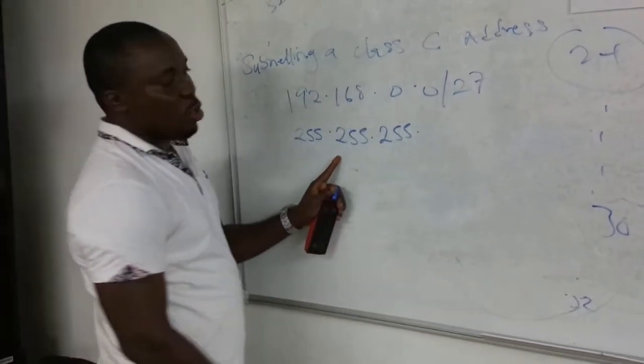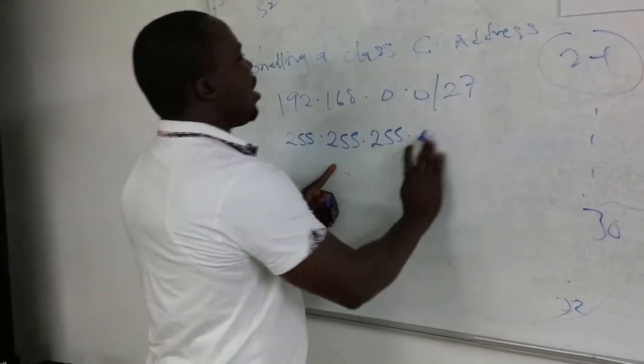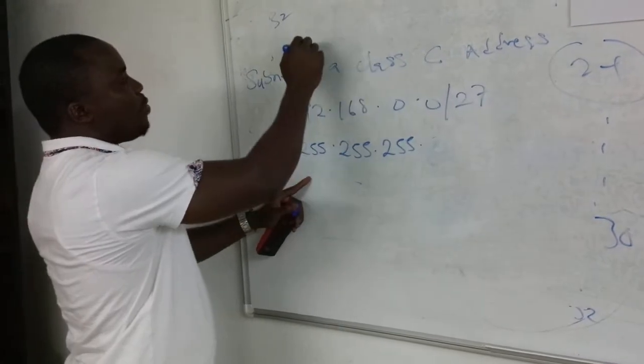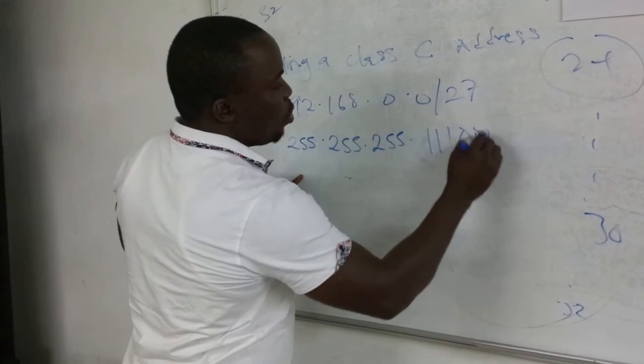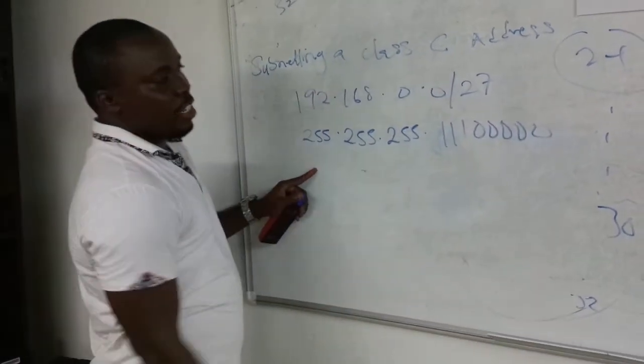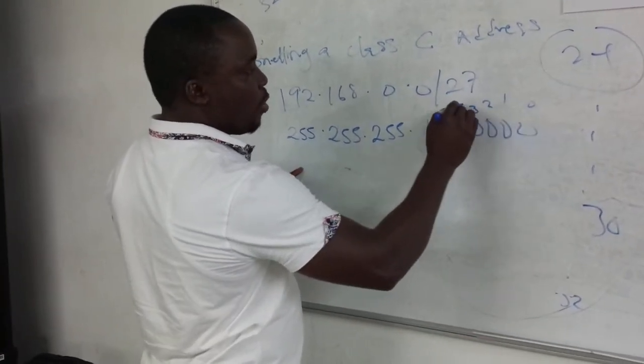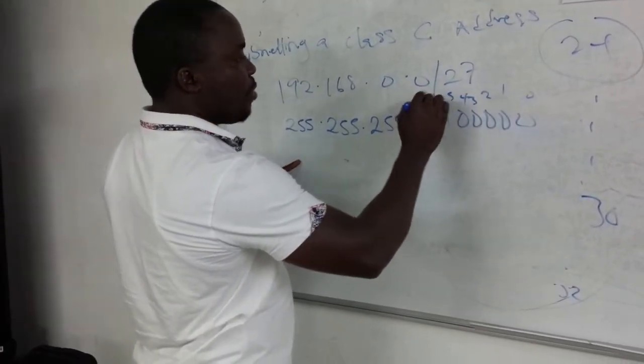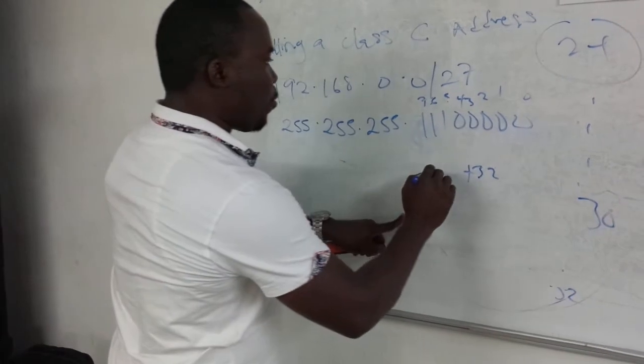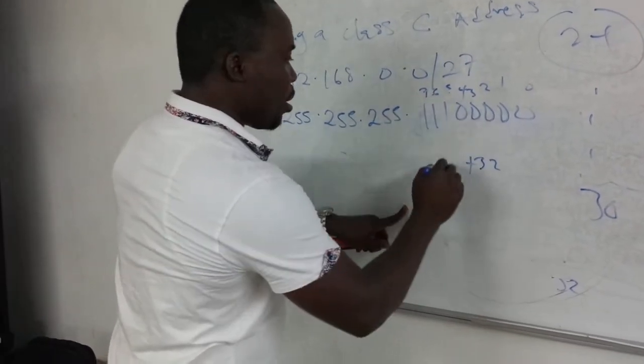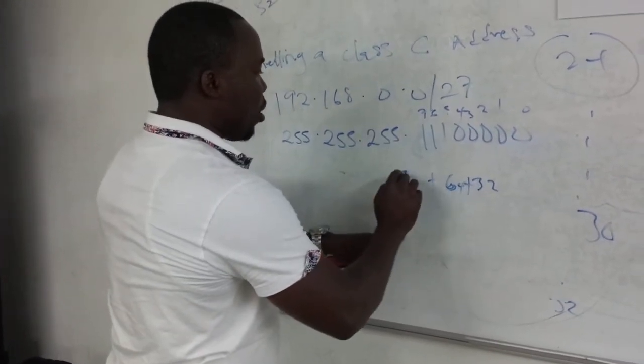So when we have 3 bits on in the fourth octet, in this 8-bit we have: 2 raised to power 0, 1, 2, 3, 4, 5, 6, 7. So 2 raised to power 5 gives us 32, 2 raised to power 6 gives us 64, 2 raised to power 7 gives us 128.